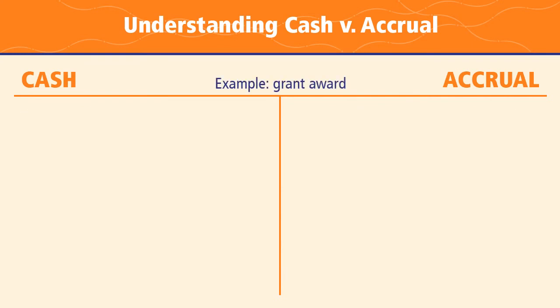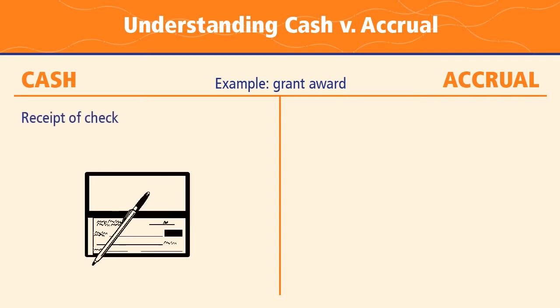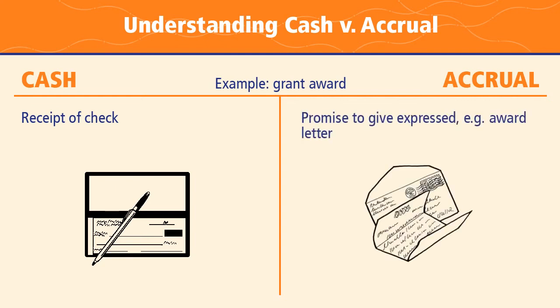Let's take a look at an example using a grant award letter. Under the cash system, you would record that grant award when the check actually arrives — when you deposit it at the bank, that's when you recognize your income. Under the accrual system, however, as soon as you receive an unconditional promise to give, such as an award letter, you record it as income even though no cash has transacted yet. It records that you have income going to be available for your organization.